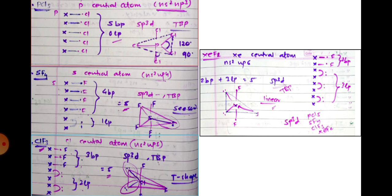ClF3 is an interhalogen compound where chlorine is the central atom with ns2np5 — seven valence electrons. Three electrons are shared with fluorine, giving three bond pairs. The remaining four electrons are unshared — two lone pairs. Total = 3 + 2 = 5, so sp3d hybridization. Geometry is trigonal bipyramidal, but with two lone pairs the shape is T-shaped.